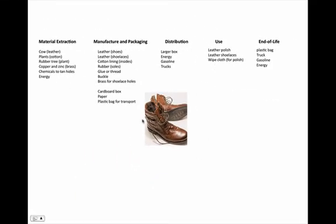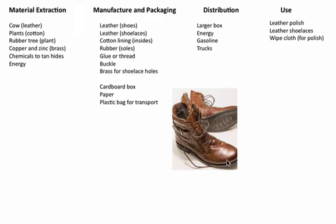Now we're going to go through one pair of boots as an example. I usually start with manufacture and packaging, and I actually physically look at my product. For a pair of boots I need leather and shoelaces — here I'm using leather as my shoelaces. These boots have a nice cotton lining, so cotton is needed for the inside. If it's a synthetic lining, you'd need to account for that. Boots have soles made out of rubber or plastic. Glue or thread to attach the sole to the boot itself, a buckle, and brass for the shoelace holes. You also need a cardboard box to package it, paper to wrap the boot within it, and usually a plastic bag for transport.